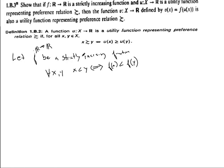And then also let u from X into R be a utility function for our preference relation.